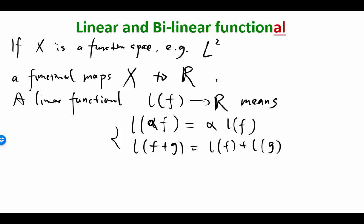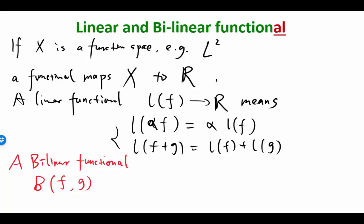Now we not only have linear functionals; we also want to define what a bilinear functional is. A bilinear functional is a bivariate functional, and in a lot of finite element literature they also call these bilinear forms. Let's call it b. Bilinear functional b operated on f and g — so you have two functions — if you give me a pair of functions, I give you a real number.